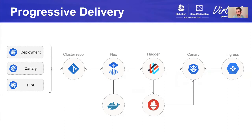So when you change something in your cluster state, let's say you bump the version of an application, Flux or another GitOps operator will apply that change. But instead of letting that change end up directly in your load balancer so your users end up on the new version, Flagger will take over from there and route a small portion of your traffic towards the new version, and keep increasing that traffic weight. It will measure metrics from Prometheus, Datadog, CloudWatch, and others. Based on those metrics, it will take the decision: is the new version fit to serve production traffic or not?